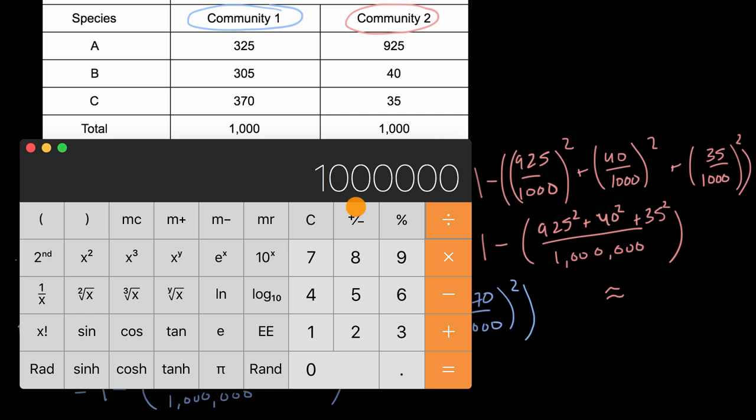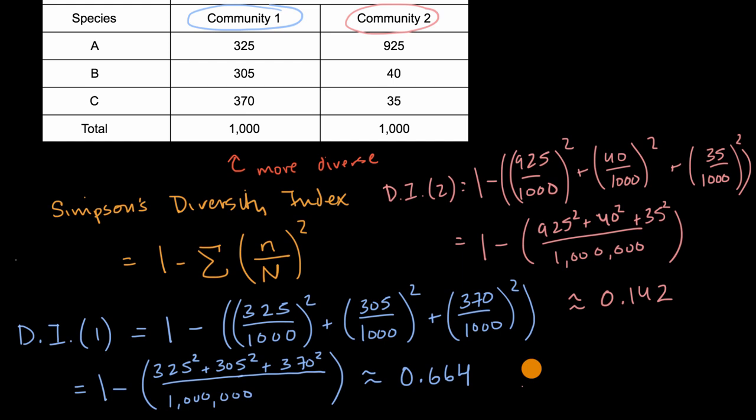yep, six zeros, is equal to that. And then you subtract that from 1, and you get, which is approximately equal to 0.142.